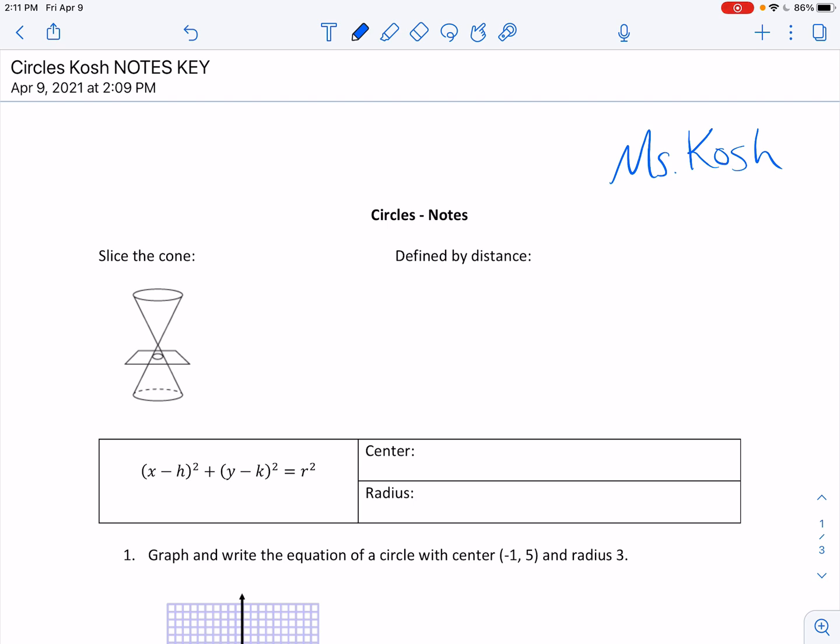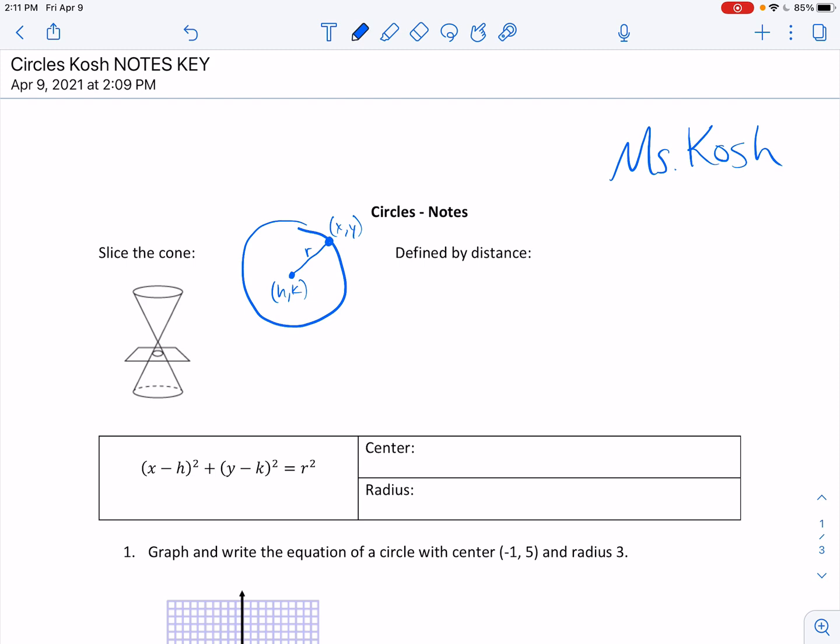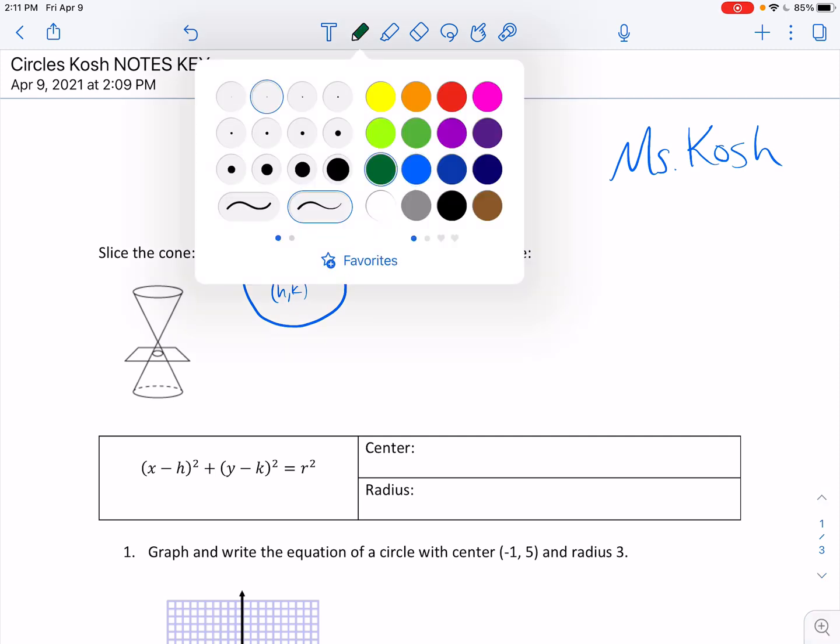We can also define it by distance. Pretend I can draw a circle. Let's say we've got a point H,K and a circle is going to be the set of all points in a plane equidistant from a given point. We call this distance the radius and this is the point X,Y. We want to be able to write an equation that lets us find X and Y for all these points.